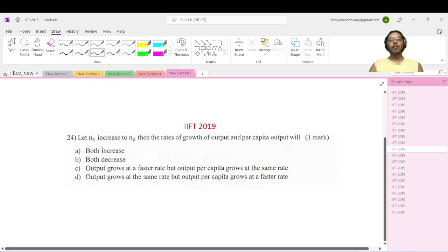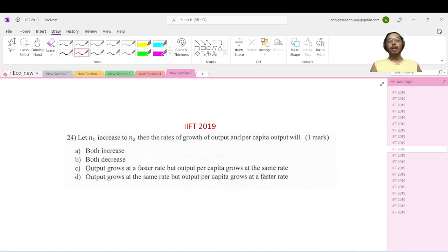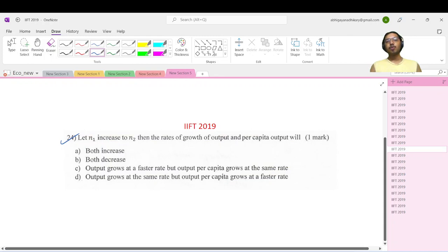Hello everyone, welcoming you to Shore of Surf classes. Today we are looking at IIFT 2019 MC Economics question paper, question number 24. If n1 increases to n2, then the rate of growth of output and per capita output will be...